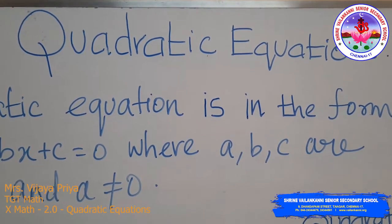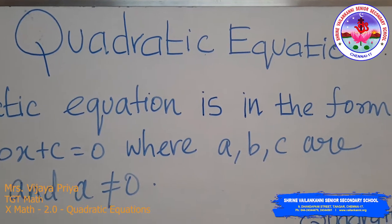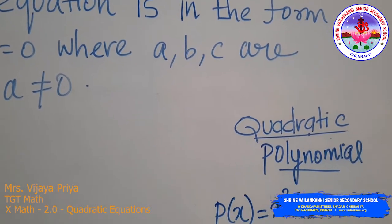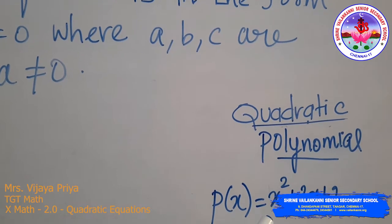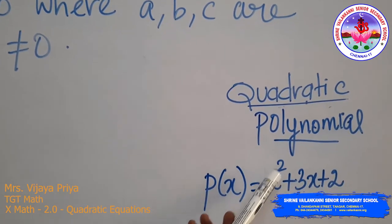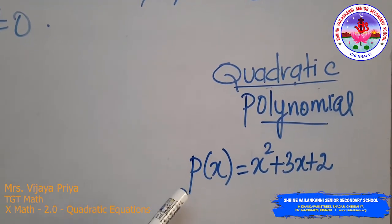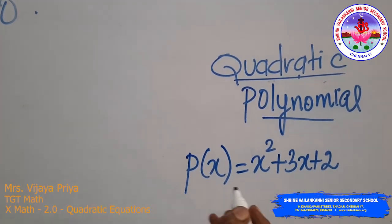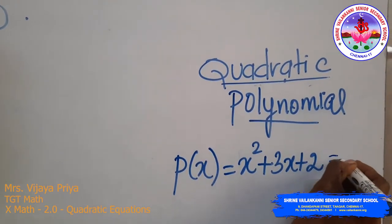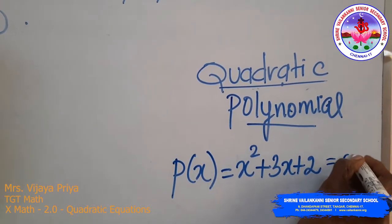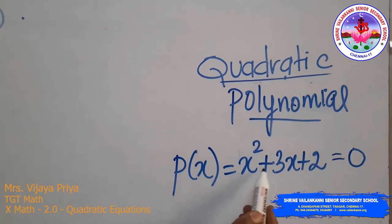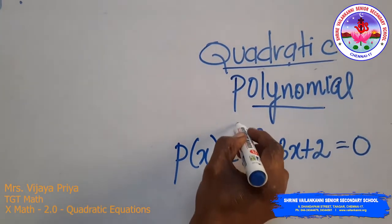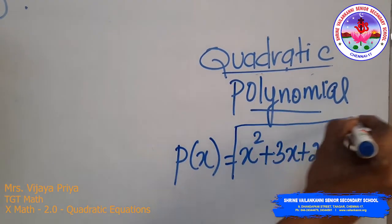You would have studied in 9th standard that a quadratic polynomial is a polynomial whose highest power of the variable is 2. To find the zeros of the polynomial, you equate it to 0, and when you do that, it becomes a quadratic equation.